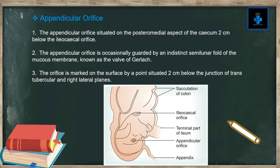Now let's move on to the appendicular orifice. The appendicular orifice is situated on the posteromedial aspect of the cecum, two centimeters below the ileocecal orifice. The appendicular orifice is occasionally guarded by an indistinct semi-lunar fold of mucous membrane known as the valve of Gerlach. The orifice is marked on the surface by a point situated two centimeters below the junction of the trans-tubercular and right lateral planes.